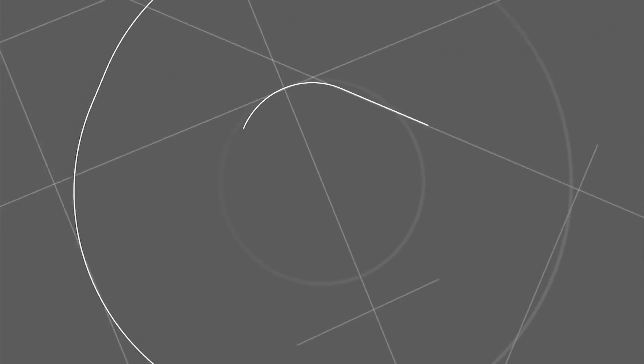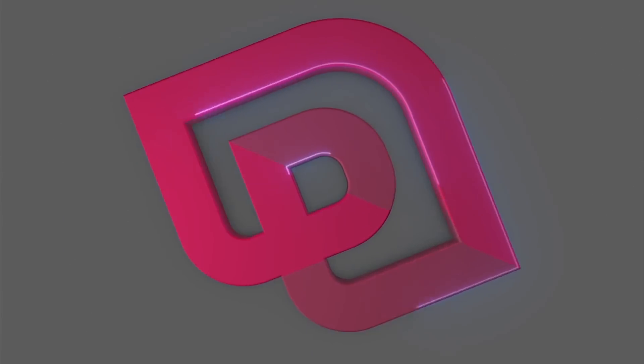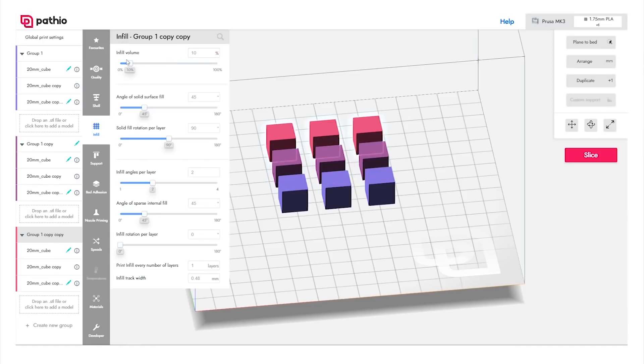It's time for some news. There's a new 3D model slicer out called Pathio. It's available as a free beta for Windows, Linux, and Mac. At first glance,